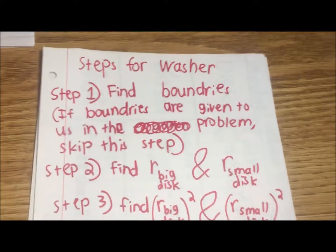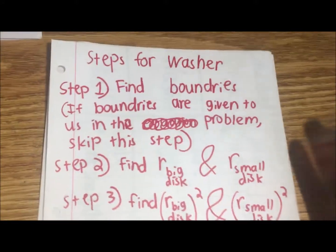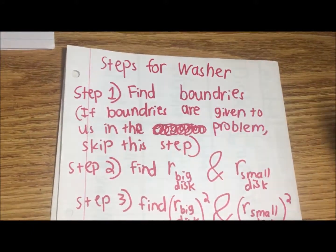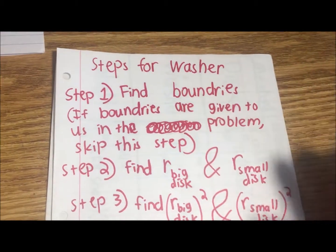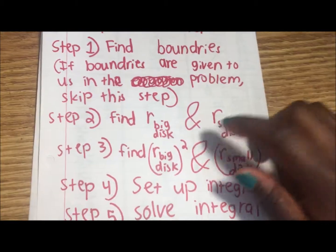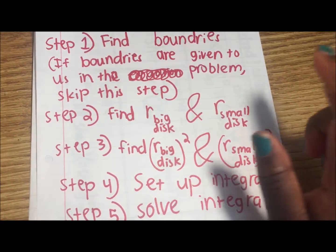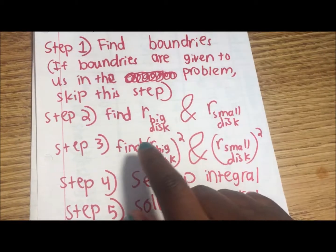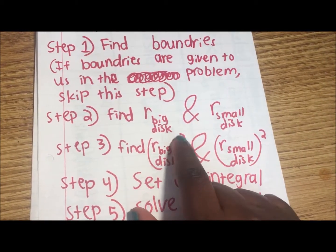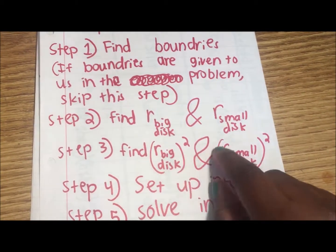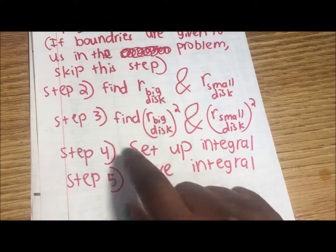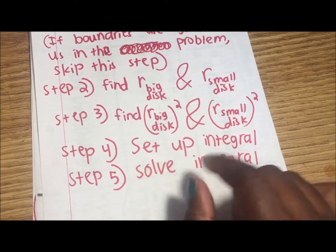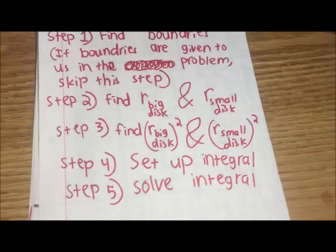Here are the steps for the washer method. Step 1, you find the boundaries — and if the boundaries are given to us in the problem, we can skip that step. Step 2, you find R big disk and R small disk. Step 3, you find R big disk squared and R small disk squared. Step 4, you set up the integral. And step 5, you solve the integral.